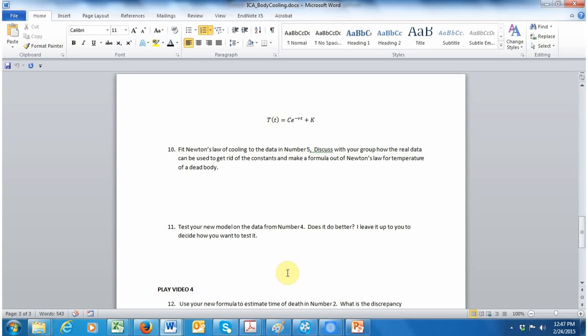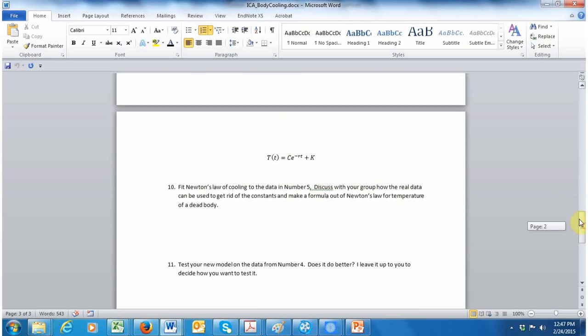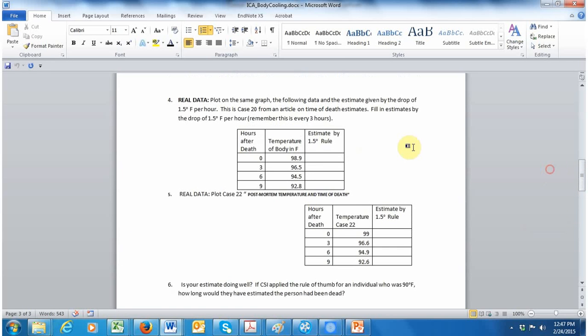So now what I'd like you to do on number eleven is to estimate—test the new model on the data from number four. So fit the model parameters using data from number five, and then use those to plug and chug. Go back to this table. Instead of estimating by the 1.5 rule, plug in the values in your new formula to the new model and see how they compare like we did before.